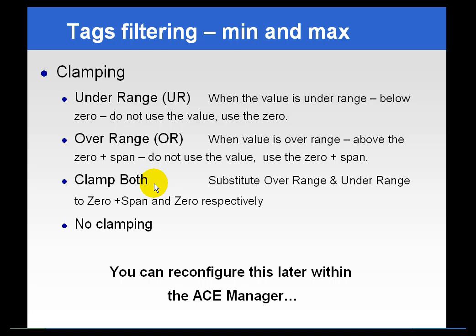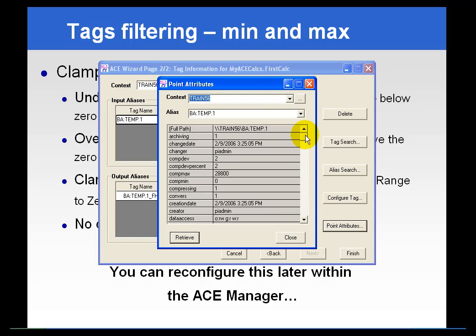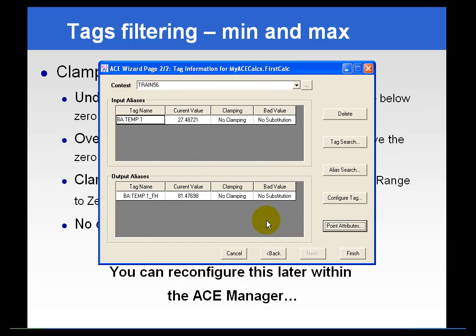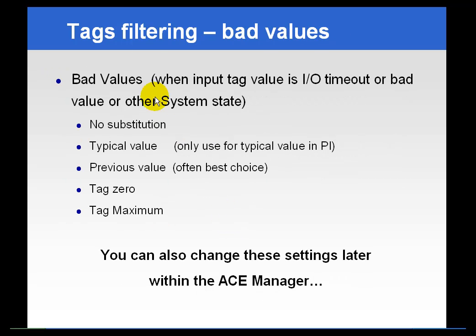You have the option to use both upper and lower clamping limits in your calculation. If you wonder what the zero and span are for a given tag, we've conveniently provided the point attribute button. If you select a tag and then point attributes, you can scroll down and see what the zero and span values are. In our case the zero value is zero and the span value is 100, so the under range clamping limit would be zero and the over range clamping would be 100. This could be wildly different for any tag, so make sure you check and don't just assume it's zero and 100. You can also reconfigure these settings later within the manager without having to recompile everything.